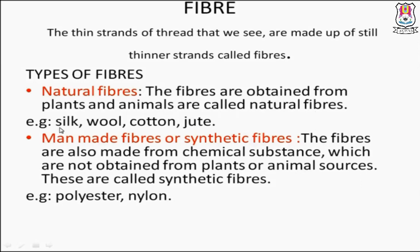Natural fibers are the fibers obtained from plants and animals. Examples include silk, wool, cotton, and jute. Man-made fibers or synthetic fibers are made from chemical substances which are not obtained from plants or animal sources. Examples are polyester and nylon.